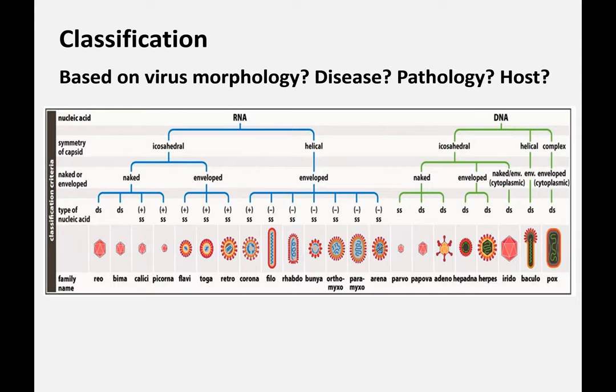Classification was quite a challenge. Should we base it on morphology, the host infected, or the disease caused? None of these work really well. What virologists decided is to base classification on nucleic acid — what type of genetic information does a virus have — because this tells you a lot about how the virus reproduces and its general characteristics.